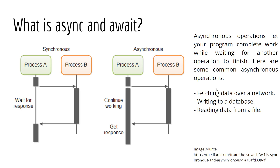So basically, what is Async and Await? It is called asynchronous programming. Asynchronous programming lets your program complete work while waiting for another operation to finish. For example, you are fetching data over a network, writing to a database, or reading data from a file. These operations take some time to complete. For example, if you want to retrieve an image, it takes some time to open a socket, send the request, wait for the image, download it, and then show it in your app. So this takes a while and it is not an instant operation.